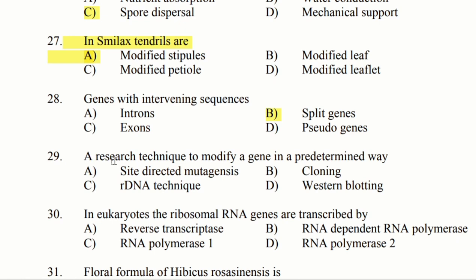Question 29: A research technique to modify a gene in a predetermined way. Option A: site-directed mutagenesis. Option B: cloning. Option C: rDNA technique. Option D: western blotting.